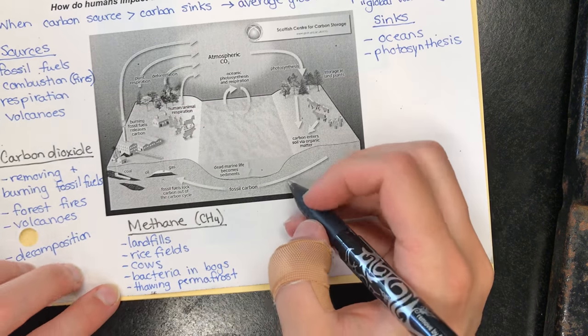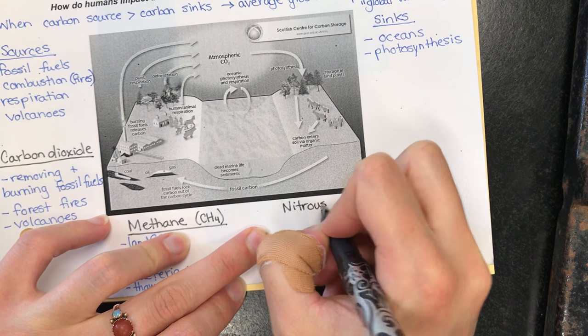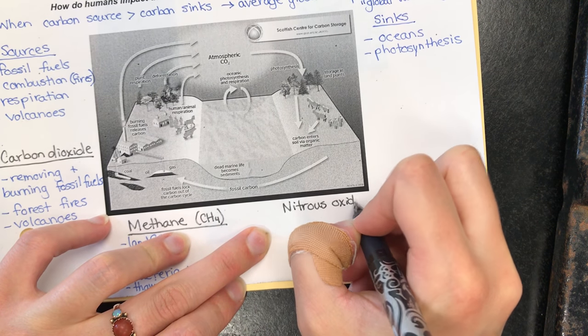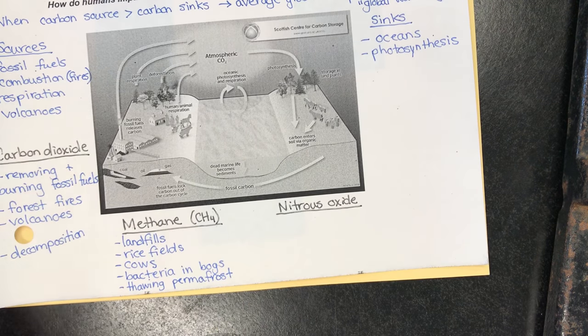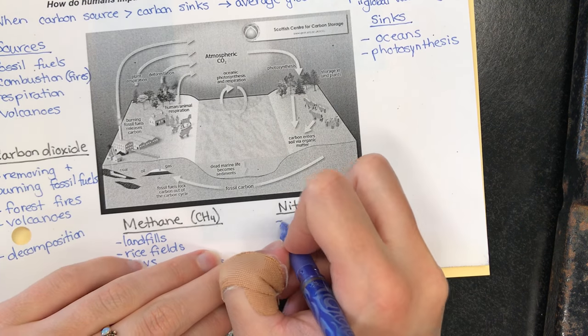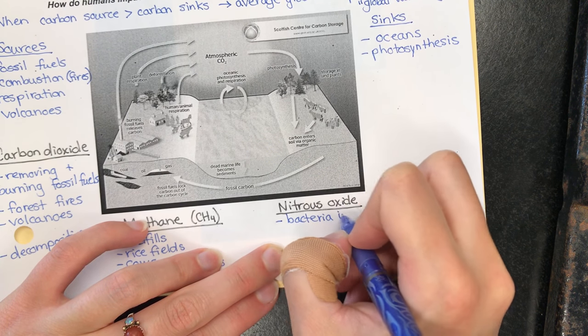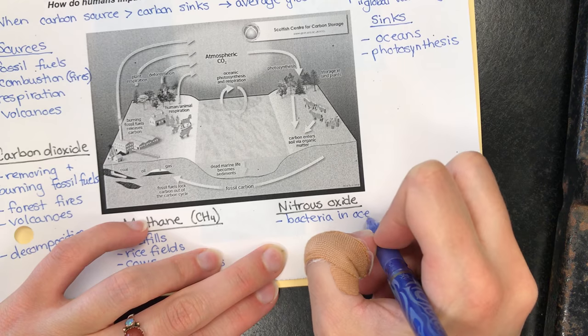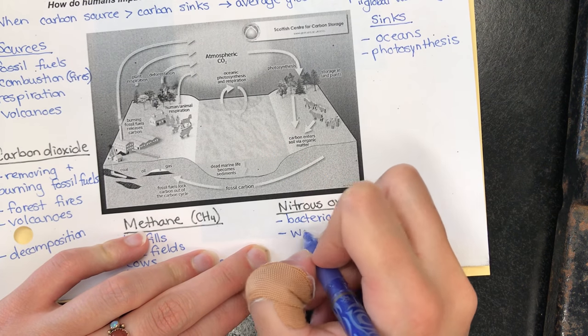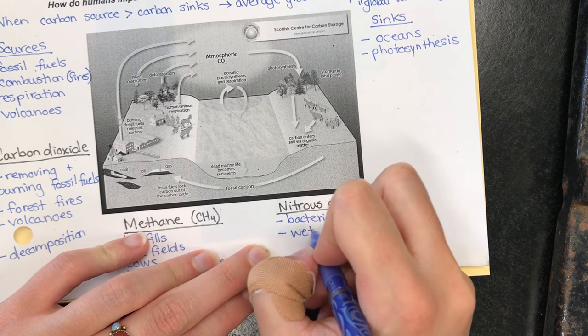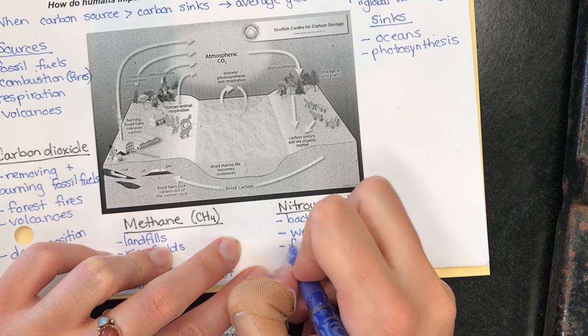Next one is nitrous oxide, that's N2O. Produced by bacteria in the ocean, from wet soil. That happens when you have flooding, a lot of flooding. Fertilizers.